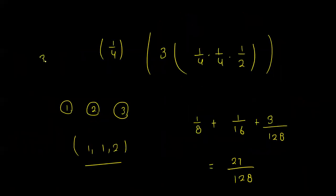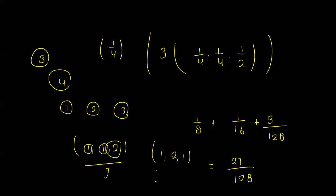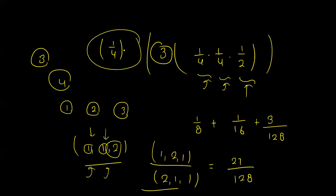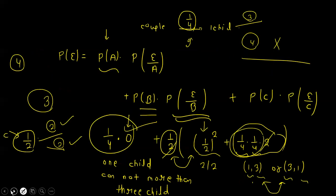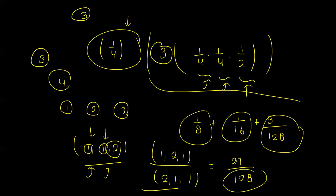In the third case, the couple has 3 children with probability 1/4. For 4 grandchildren from 3 children, combinations like (1,1,2) and its arrangements must be considered, each with probabilities 1/4, 1/4, and 1/2. Taking the LCM and summing all cases gives the final answer of 27 over 128.